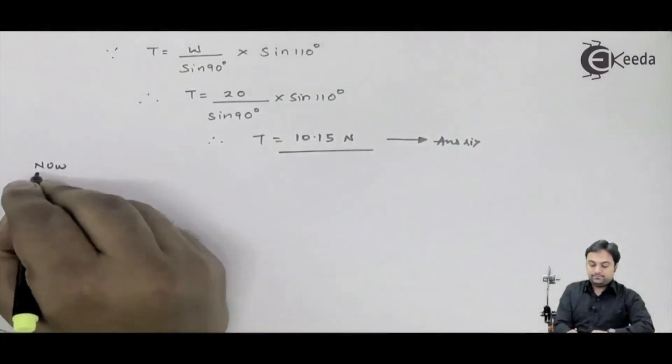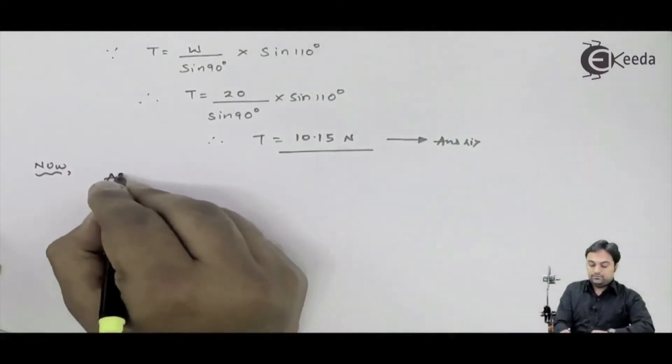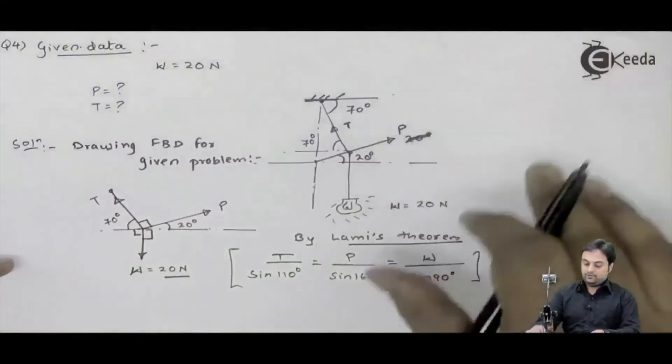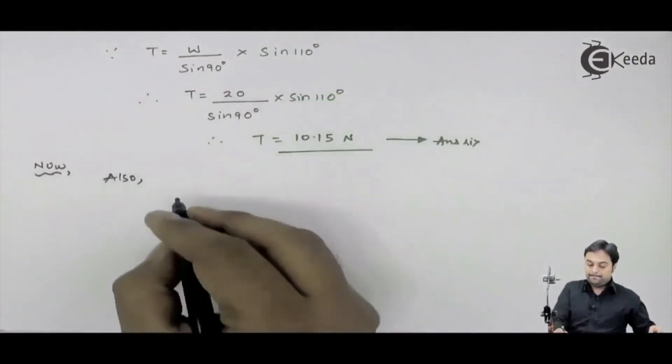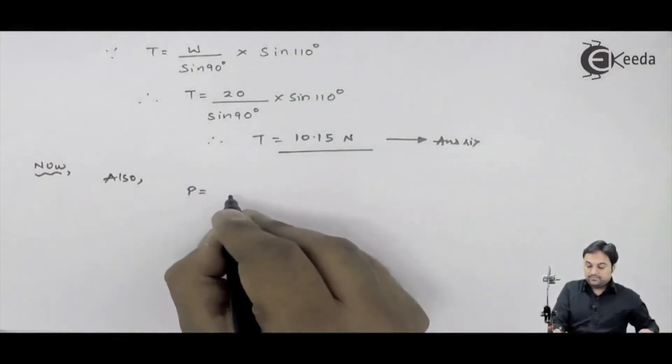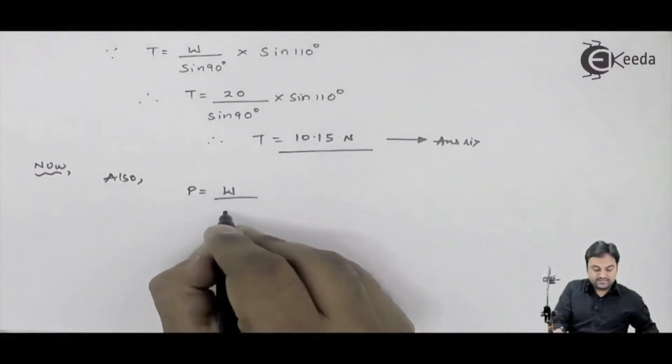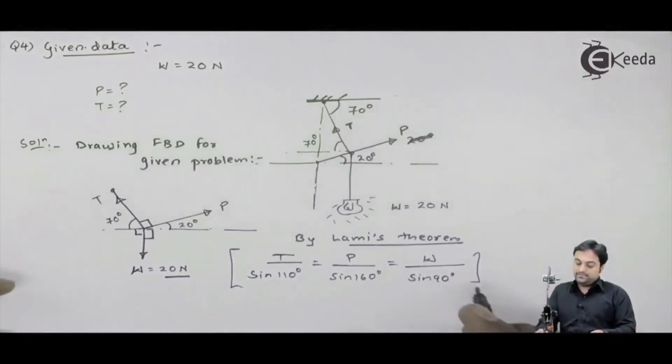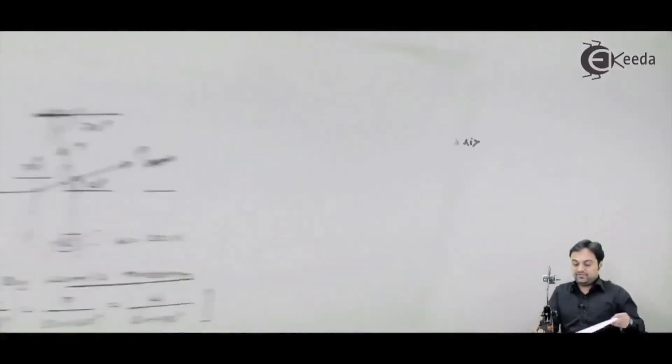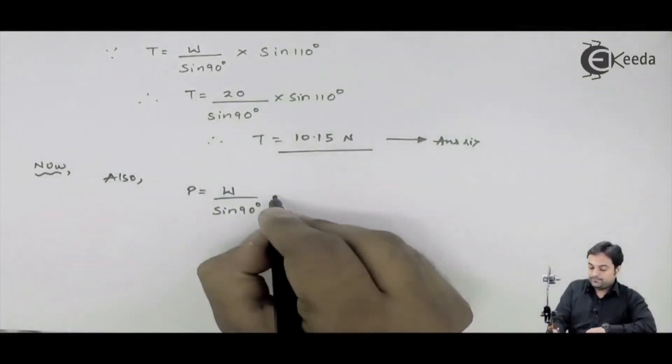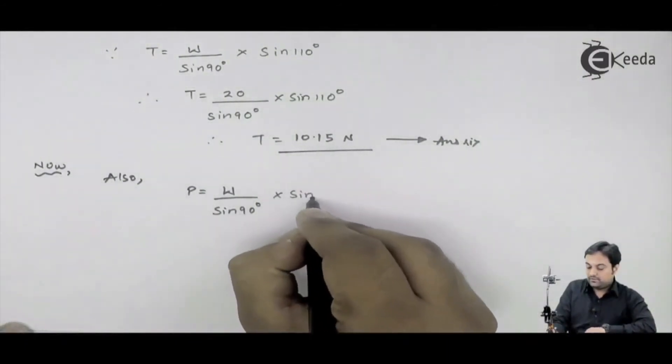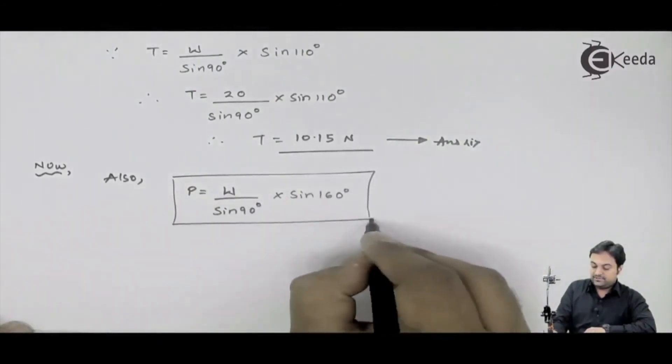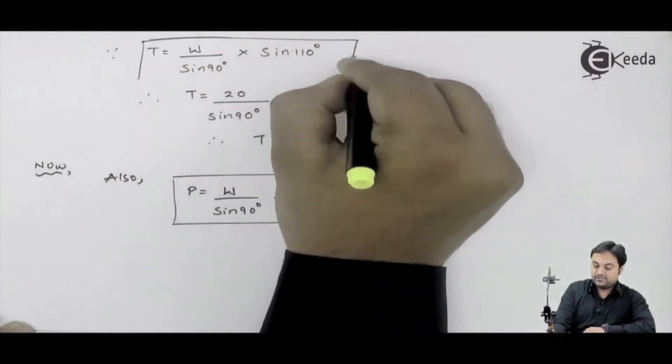Now also, I want the value of P. So P will be W divided by sin 90. I will keep W upon sin 90 as it is, sin 160 will be on the other side, into sin 160. So that is the relation which I am getting here. Previously for T, this was the relation.